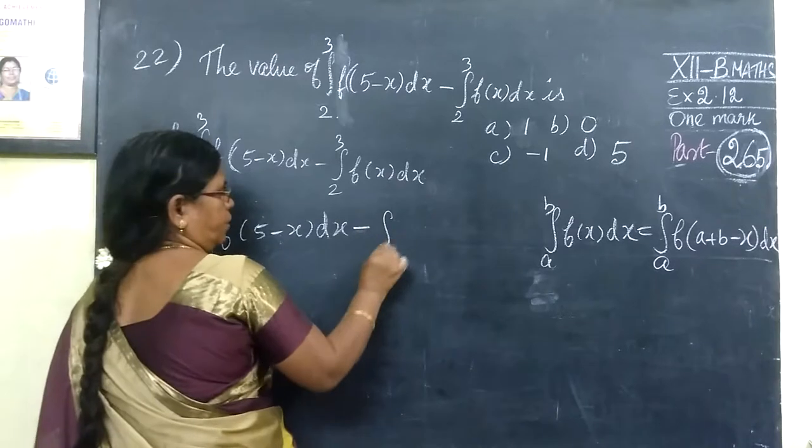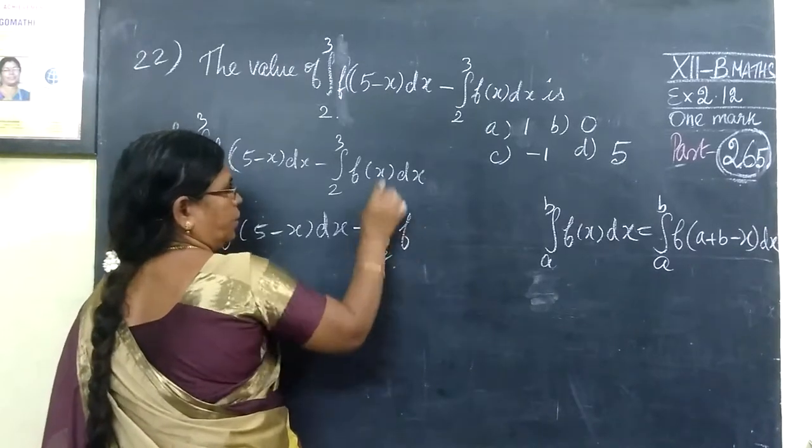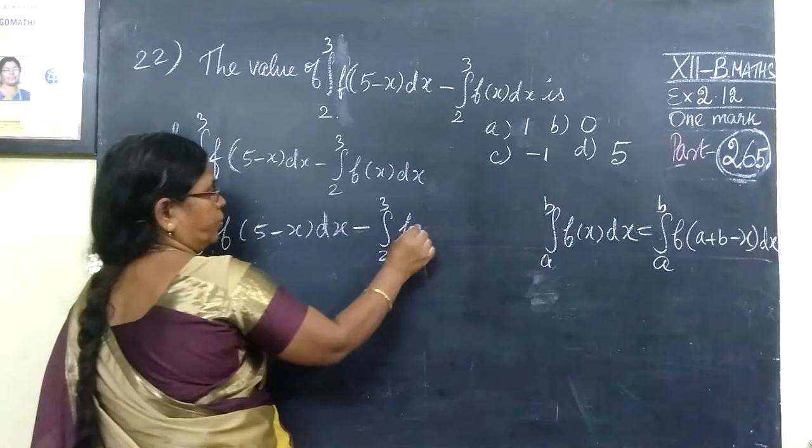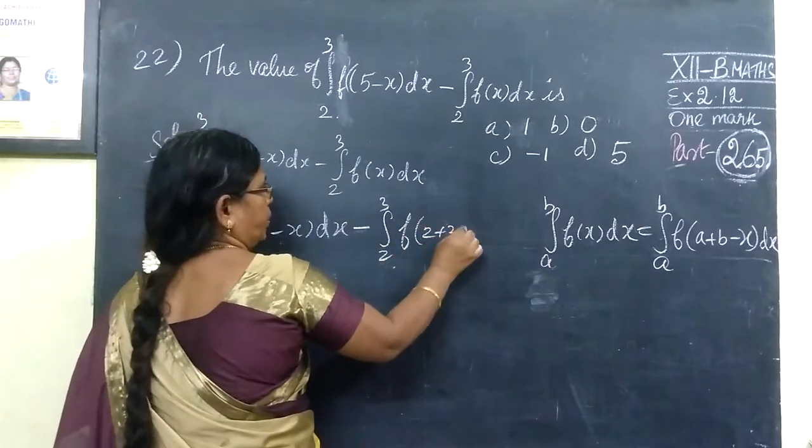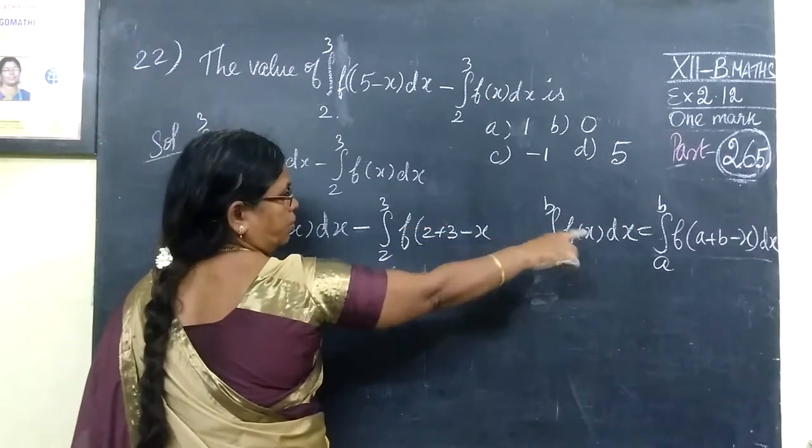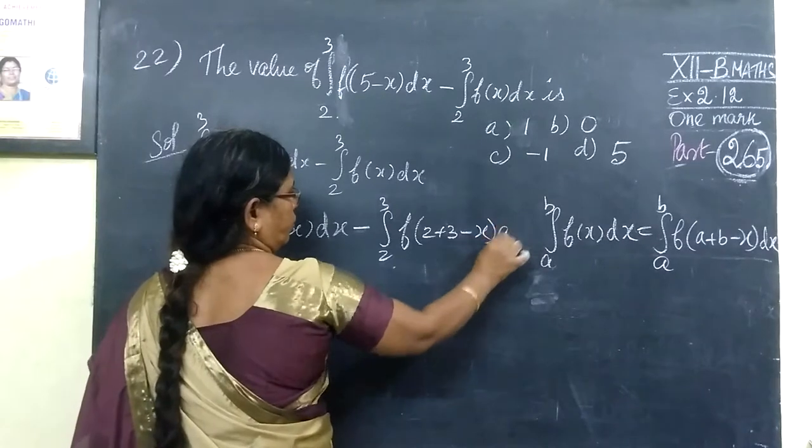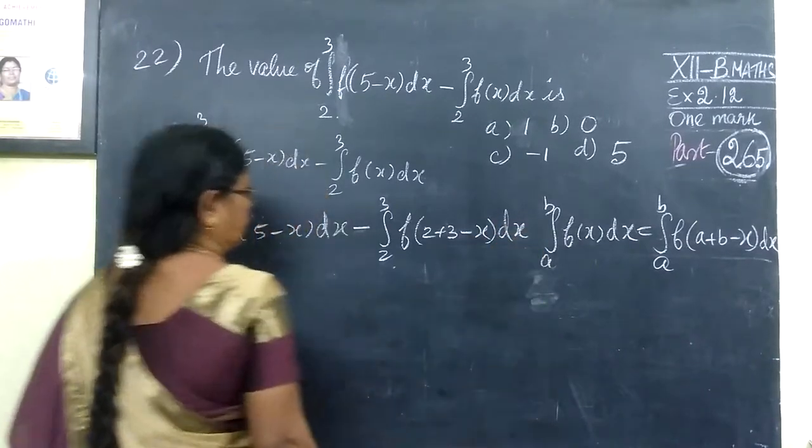Then minus integral 2 to 3. So here a equals 2, b equals 3, so a plus b equals 5, then minus s.